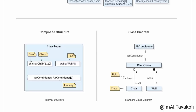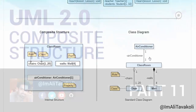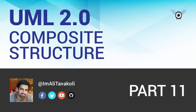Here is the equivalent class diagram of the classroom class. Here are the chair and wall classes that are related to the classroom class. Here we are mentioning the role — the name of the attributes of the classroom class. We are also showing its relationship with the air conditioner class, which has a one-to-one relationship. That's all there is to the composite structure.